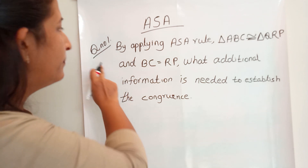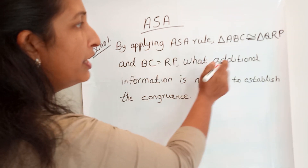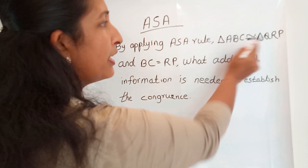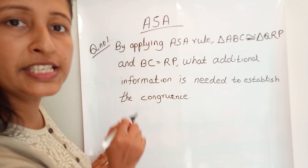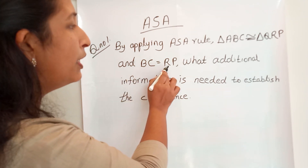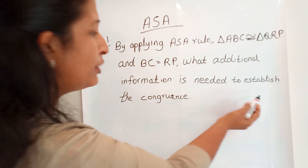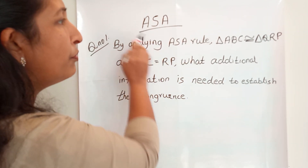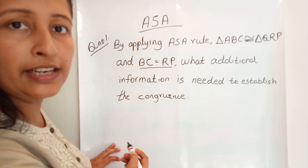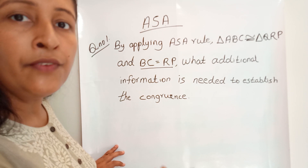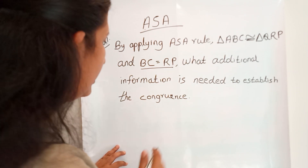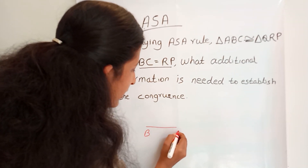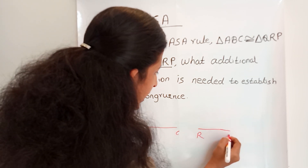Next, we can go through an example by applying the ASA rule. Triangle ABC is congruent to triangle PQR. They have given that these two triangles are congruent, and one more condition: BC is equal to RP. What additional information is needed to establish the congruence?